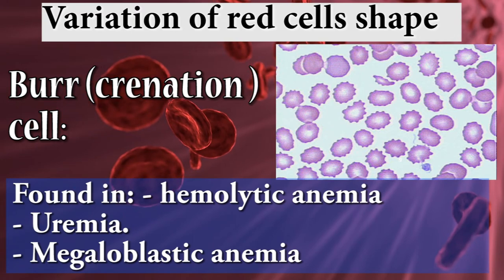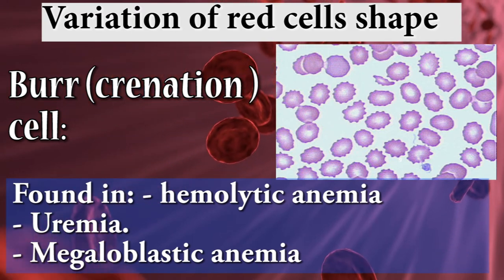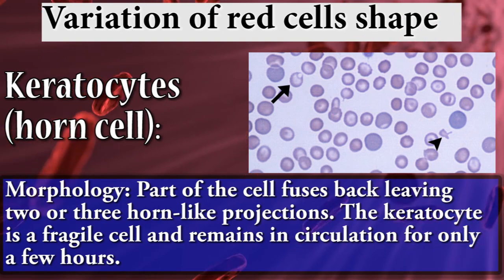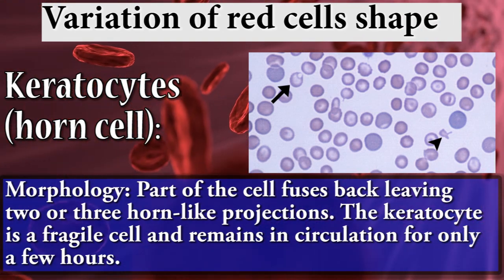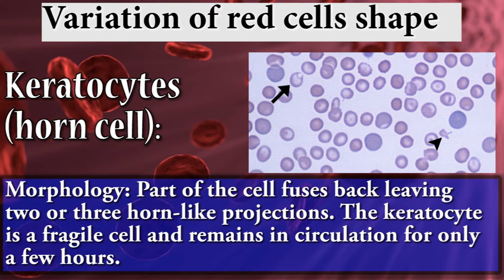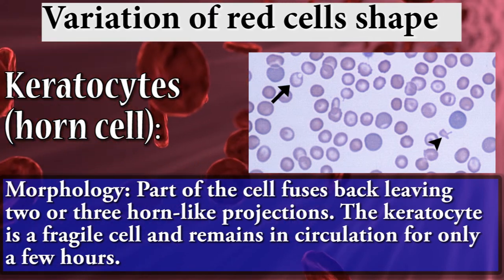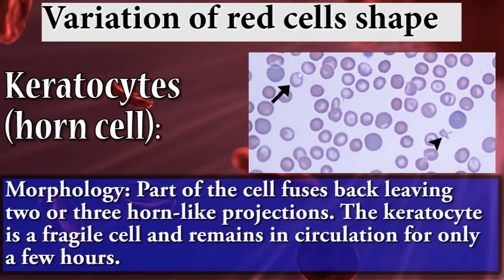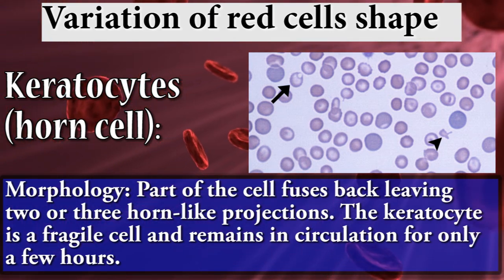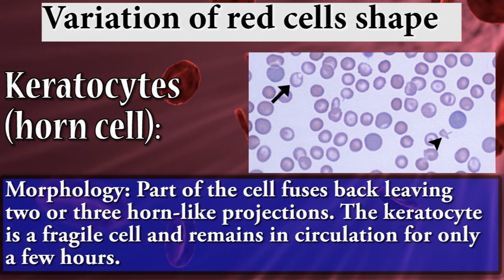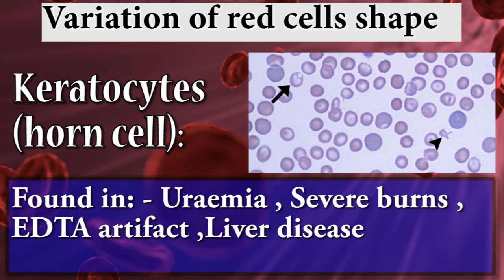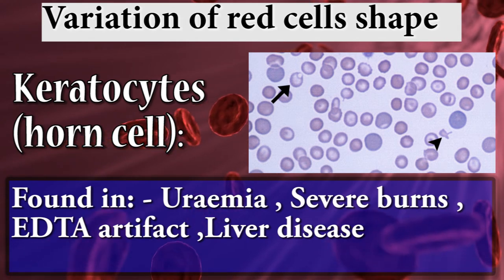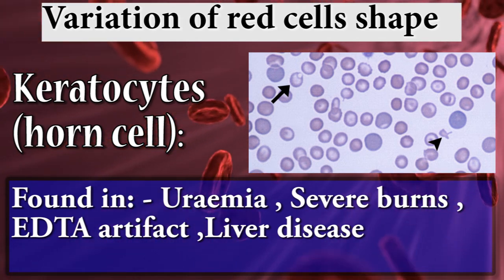Burr cells are found in hemolytic anemia, uremia, and megaloblastic anemia. Keratocytes, or horn cells, have parts of the cell membrane fused, leaving two or three horn-like projections. The keratocyte is a fragile cell that remains in circulation for only a few hours. Found in uremia, severe burns, EDTA artifact, and liver disease.